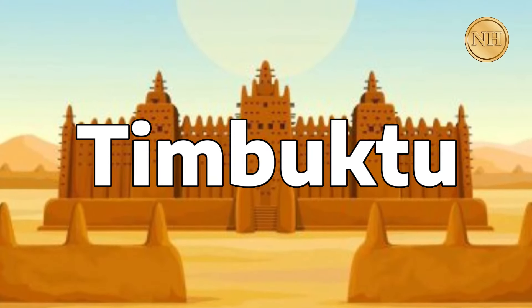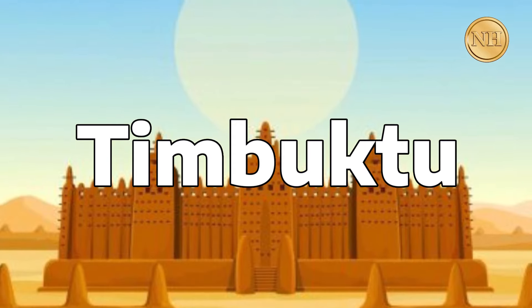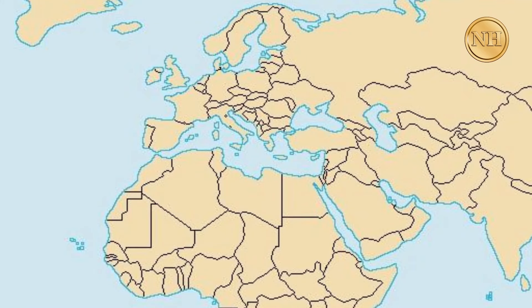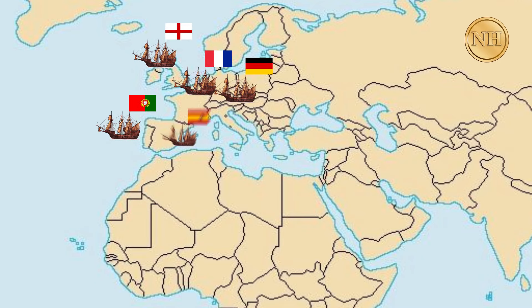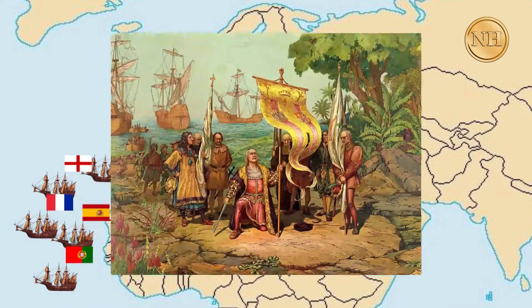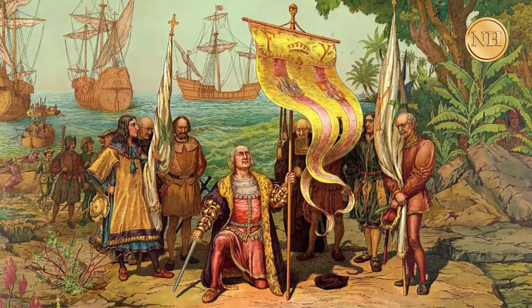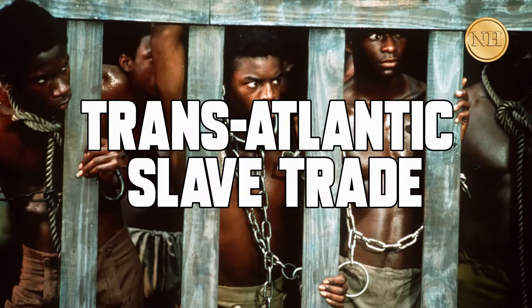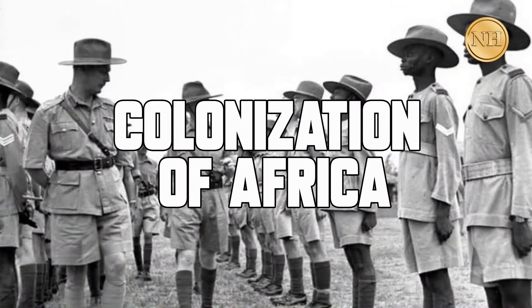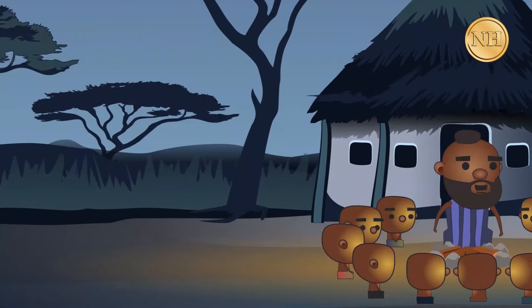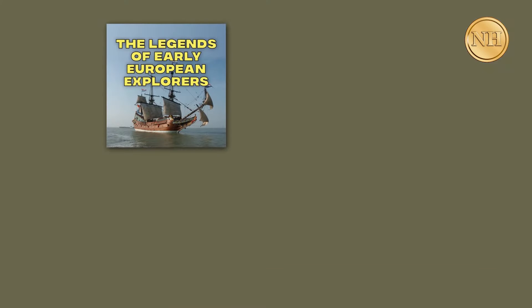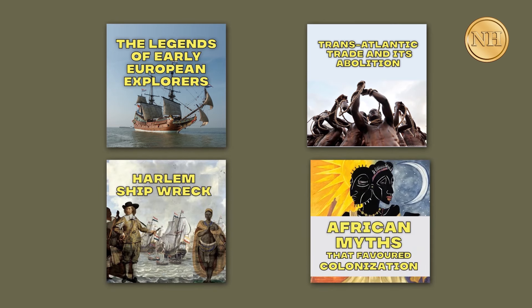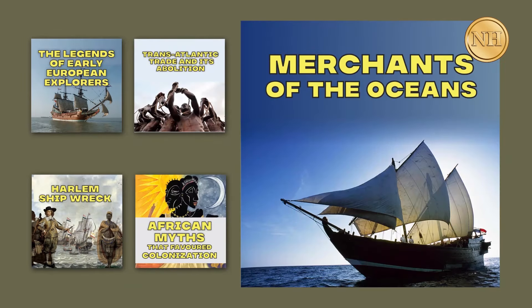In fact, the major African city recognized by most Europeans around the 14th century was Timbuktu. Many European explorers sailed through the Atlantic Ocean from France, Portugal, England, Germany, and Spain to see for themselves what was in Africa, and a number of them landed in West African ports. These events led to the realization of the vast wealth of Africa by the Europeans, which later gave birth to the transatlantic slave trade and later the colonization of Africa.